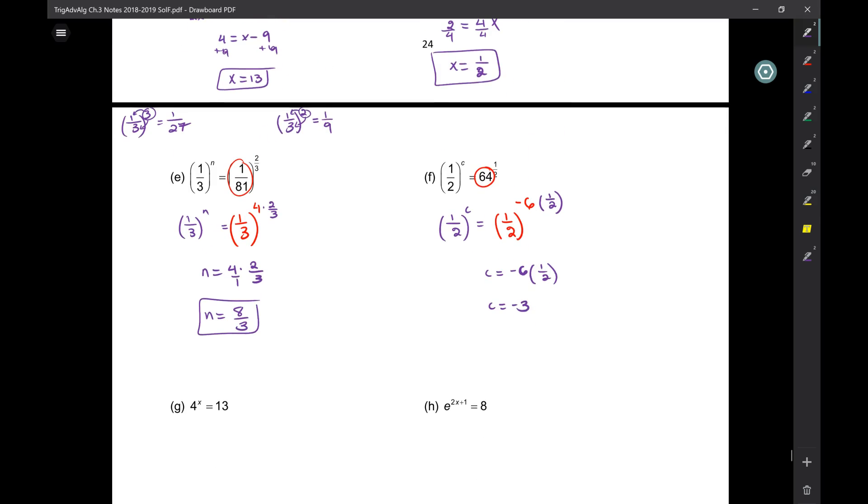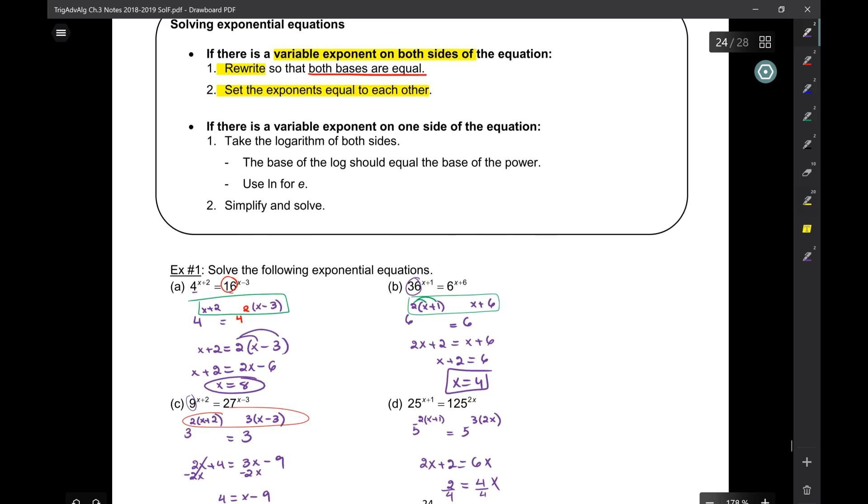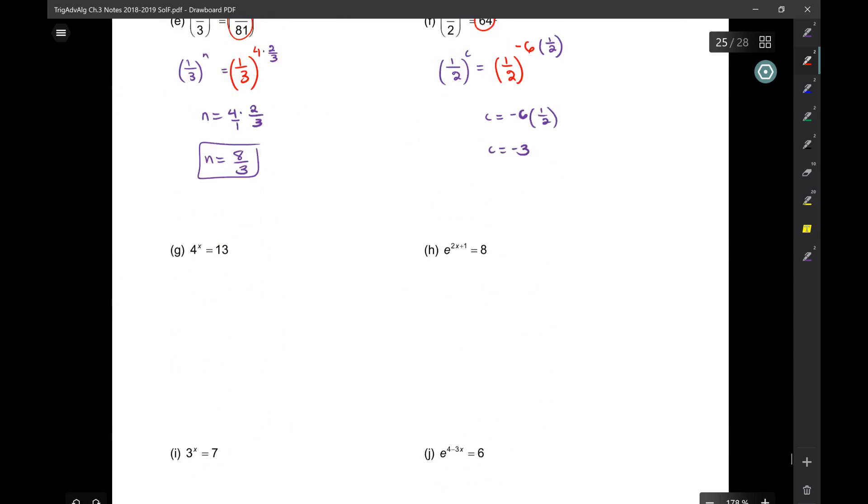So these are all the ones where you have an exponent on both sides. What about this one? What if there is a variable exponent only on one side of the equation? Then what you have to do is take a logarithm of both sides. That's the process. We say take a log of both sides. The thing is that the base should equal the base of the power. And then when the base is E, remember the logarithm is just LN. So let's do these now.